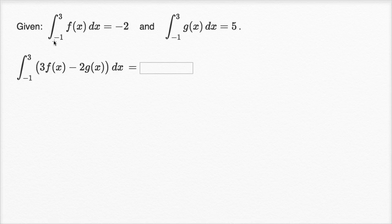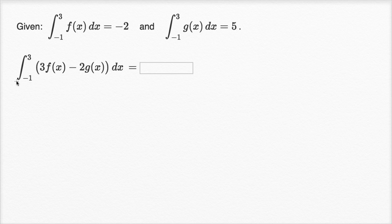Given that the definite integral from negative one to three of f of x dx is equal to negative two, and the definite integral from negative one to three of g of x dx is equal to five, what is the definite integral from negative one to three of three f of x minus two g of x dx?